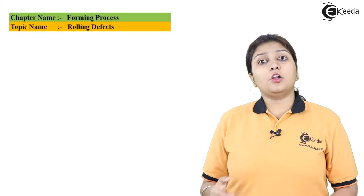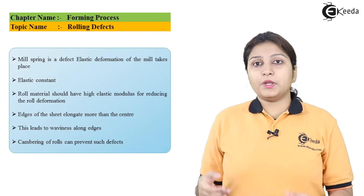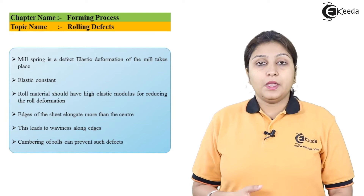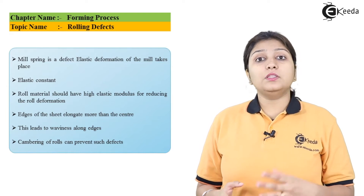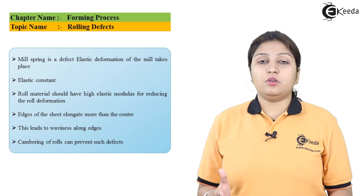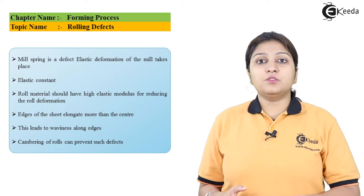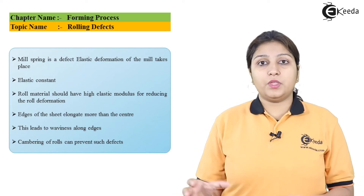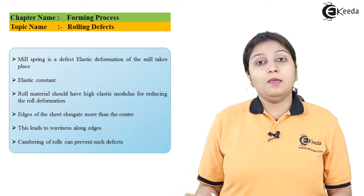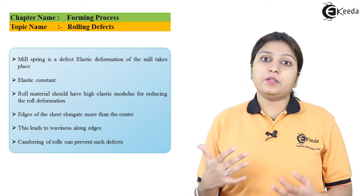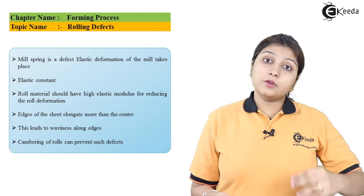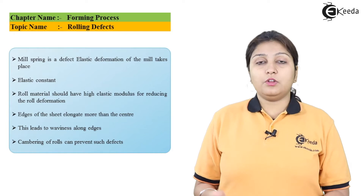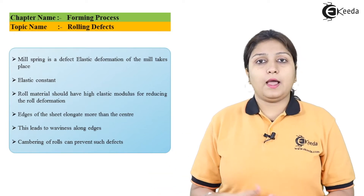The first rolling defect is the mill spring defect. It is a major defect which occurs due to thickness variation of the material. If your material is more thick or less thick than the prescribed thickness it is supposed to be, mill spring defect occurs. The deflection can be achieved but the rolling forces would be higher.